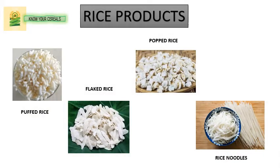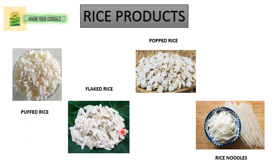Are you familiar with moodi, chire, khoi and all? Let us learn the English names because while you will be doing diet charts or menu planning you will need the English names. Rice products: puffed rice for moodi, flaked rice for chire, popped rice for khoi. There is another variety — rice noodles — which is a very fine and thin noodle and very tasty as well.